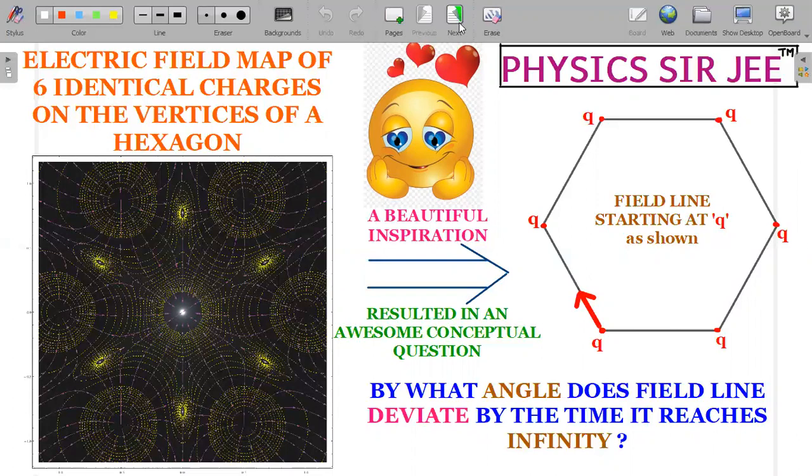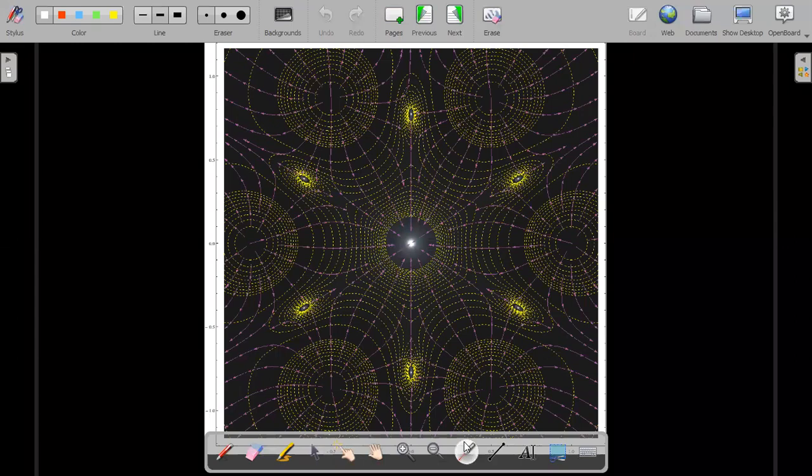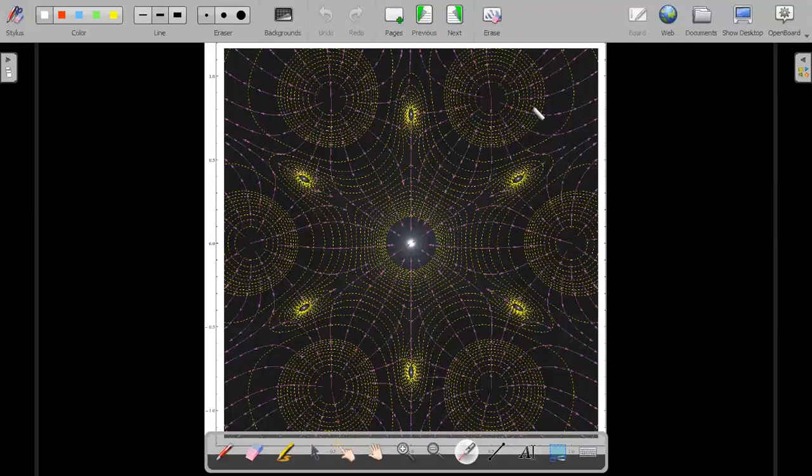Let me give you the full glory of this particular field map so that you can enjoy it a bit more before we dive into the actual question. If you carefully observe, these circles that the computer simulation is depicting are the point charges from where you could see the field lines are originating. This is the center point where there is a null point or the neutral point where the field goes to zero.